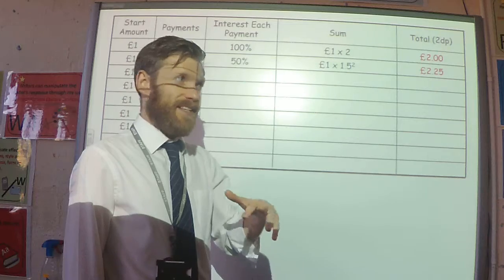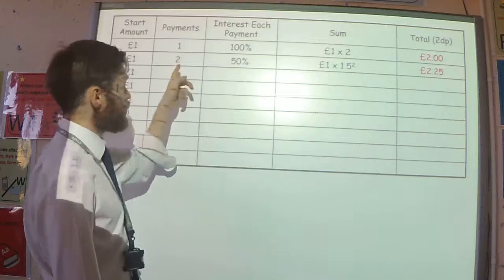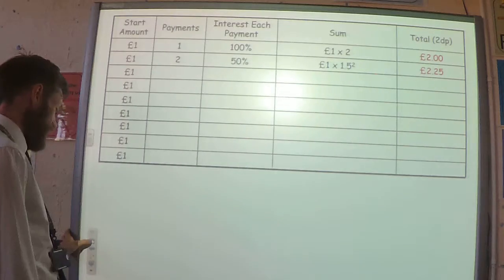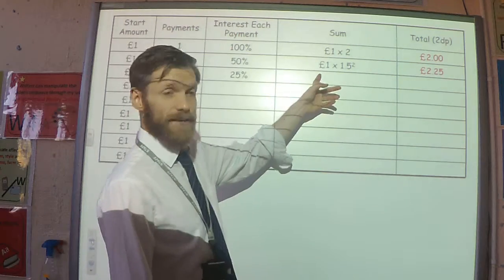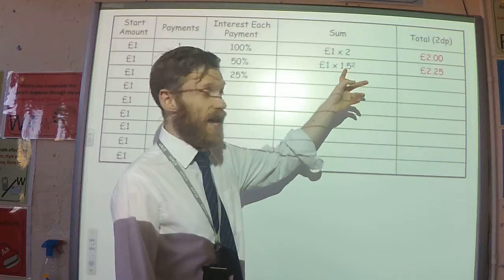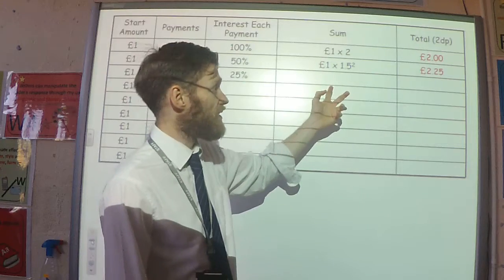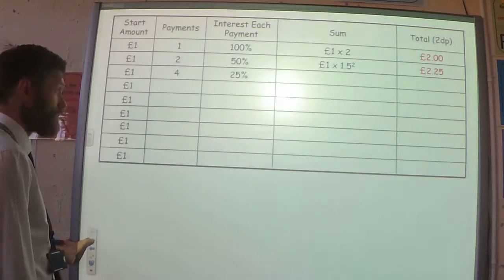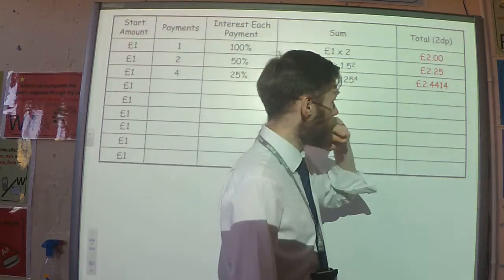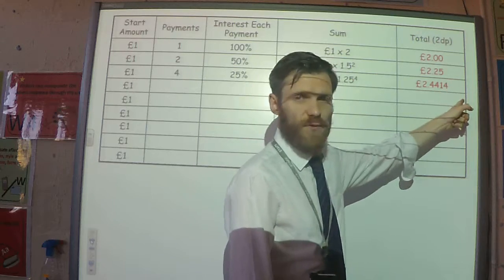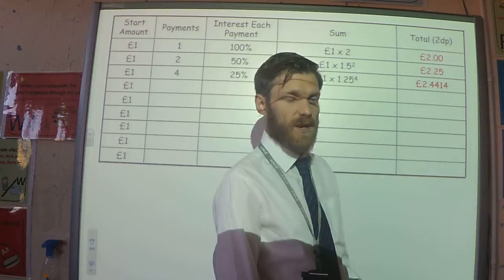Let's see if we can do any better than £2.25. What about if, rather than having two payments of 50%, I had four payments of 25%? That's going to be my £1 times 1.25 — because the multiplier for a 25% increase is 1.25 — to the power of four. If I do that, I get £2.44, including extra decimal places just to illustrate where Euler's number comes from.